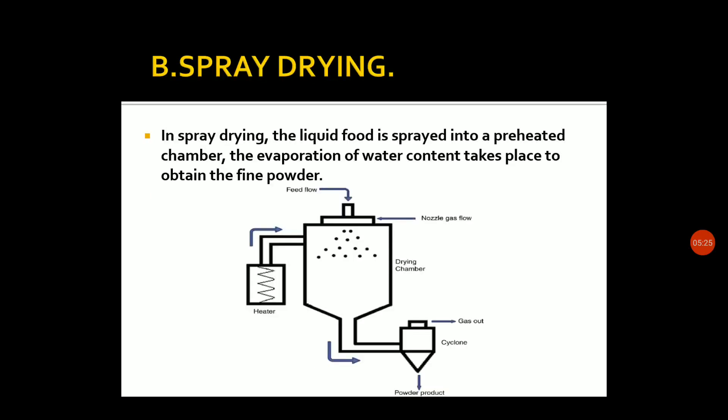The next drying method is spray-drying. In spray-drying, the liquid food is sprayed into a pre-heated chamber. The evaporation of water content takes place to obtain a fine powder.